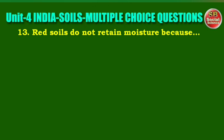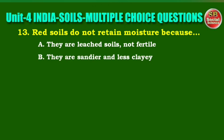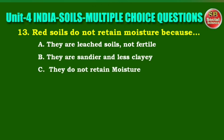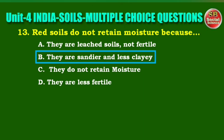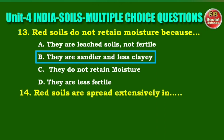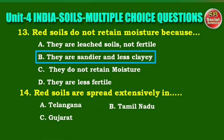Next question: red soils do not retain moisture because. Options are: they are leached soils and not fertile; they are sandier and less clay; they do not retain moisture; they are less fertile. The right answer is option B, they are sandier and less clay. Next question: red soils are spread extensively in. Options are: Telangana, Tamil Nadu, Gujarat, Rajasthan. The right answer is option B, Tamil Nadu.